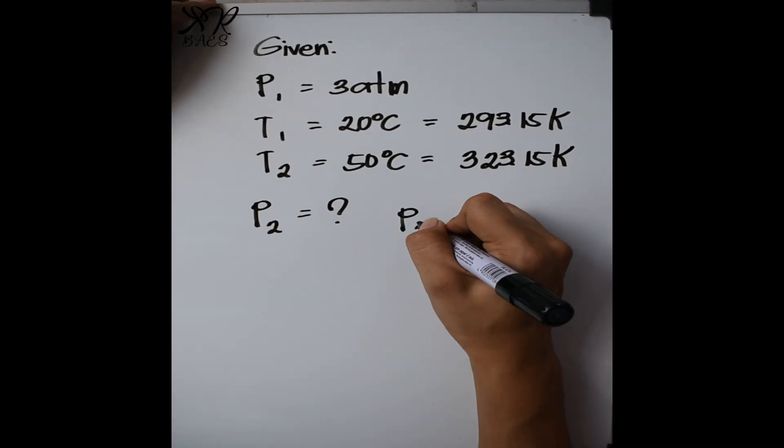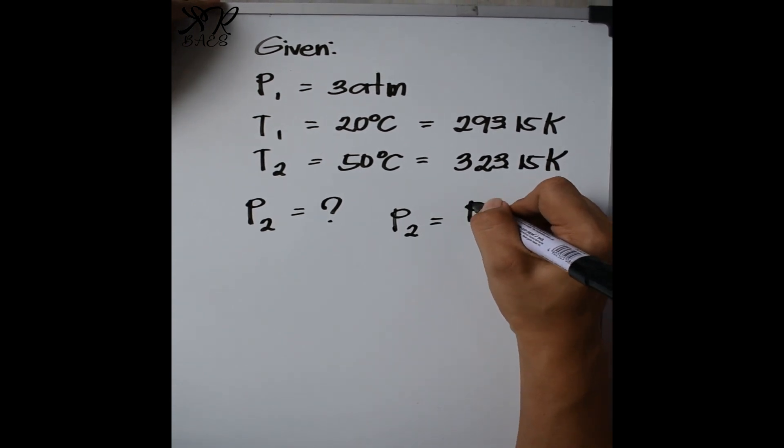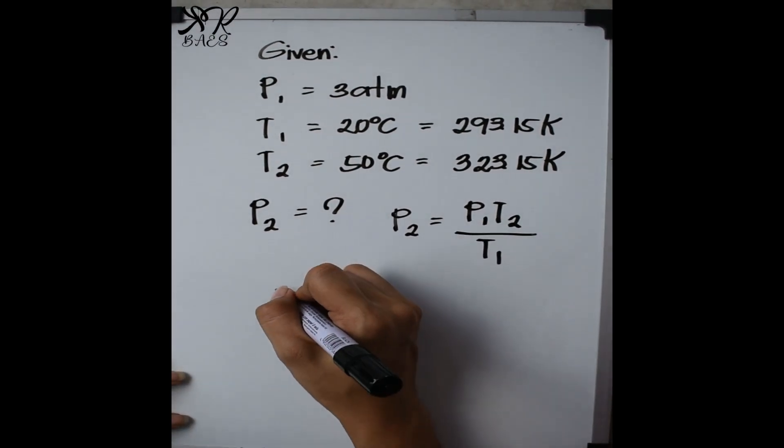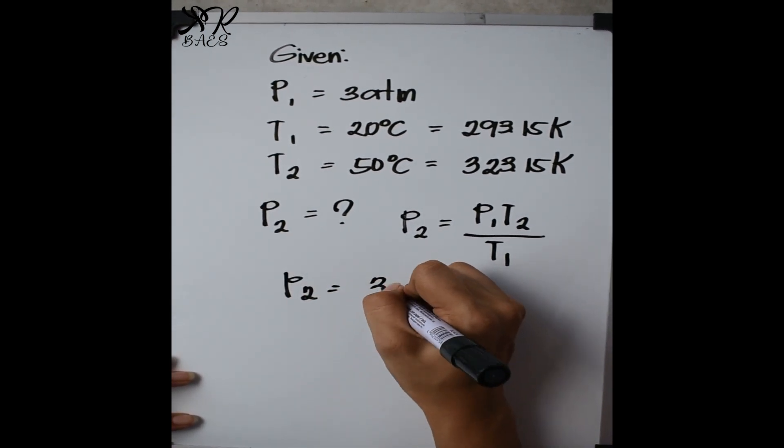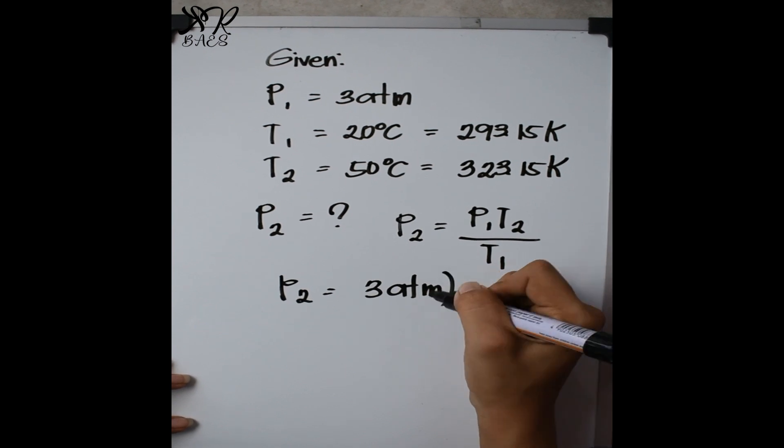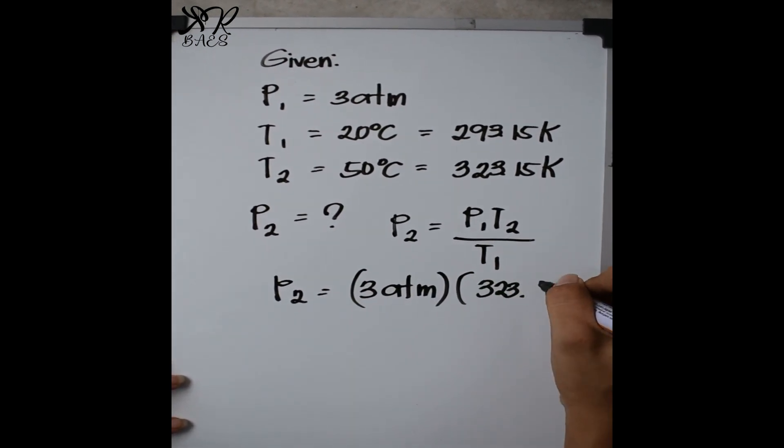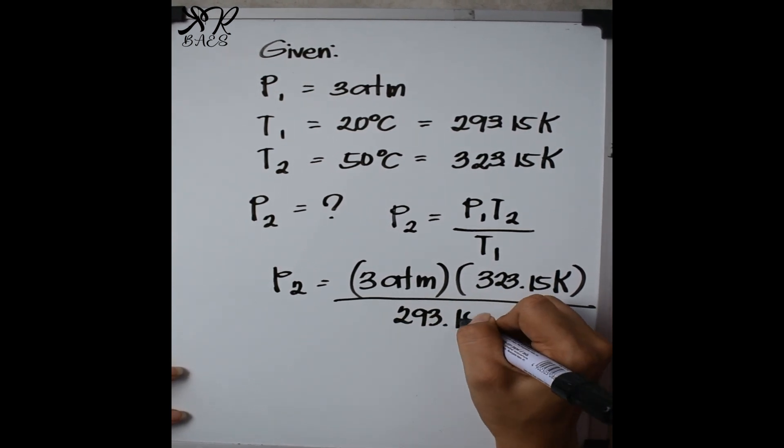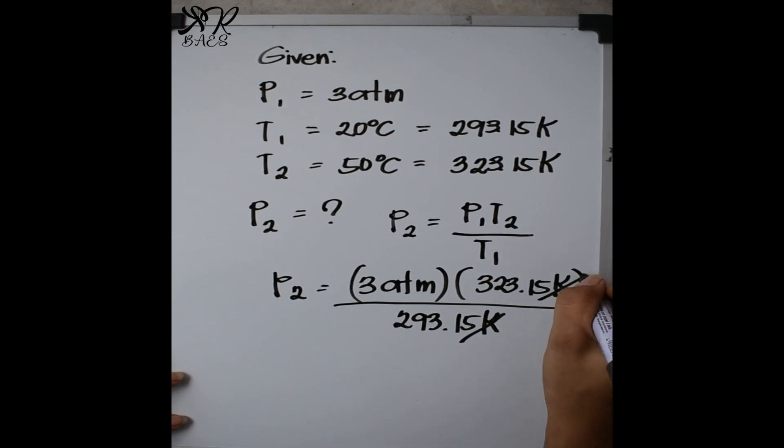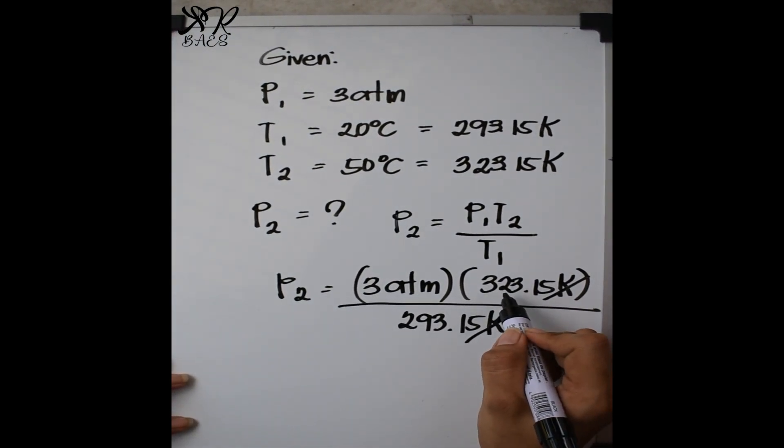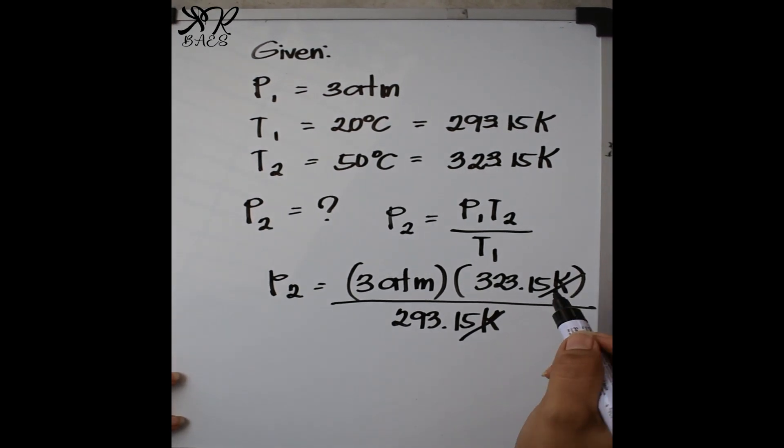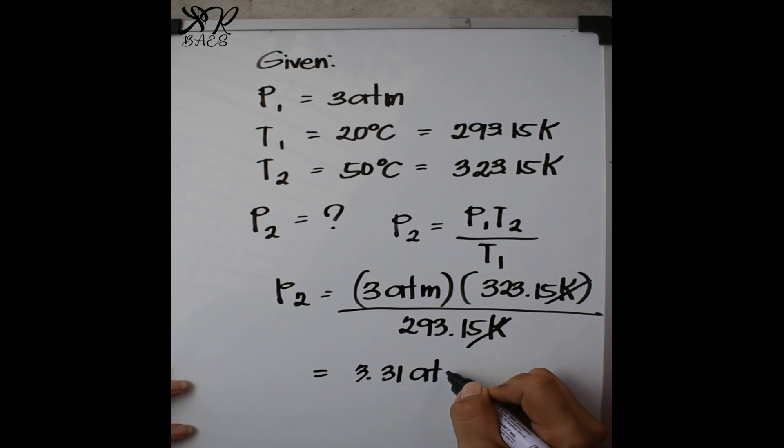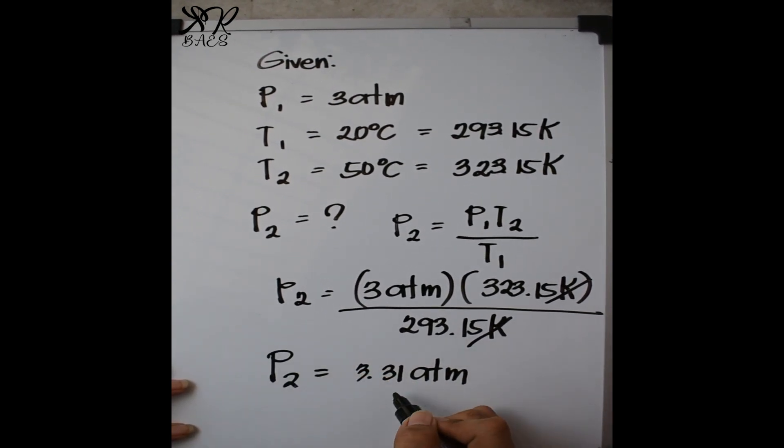So, in solving for the final pressure, we're going to use the formula P sub 2 is equal to P sub 1 times T sub 2 all over T sub 1. So, that is P sub 2 is equal to 3 atmosphere times 323.15 Kelvin all over 293.15 Kelvin. We're going to cancel the unit Kelvin, multiply 3 atmosphere times 323.15 and divide the answer by 293.15, and the answer is 3.31 atmosphere. So, our final pressure is 3.31 atmosphere.